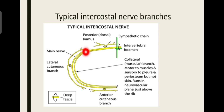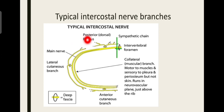The next branch is the lateral cutaneous branch. The lateral cutaneous branch also arises near the neck and travels the course of the intercostal nerve. When it reaches the mid-axillary line — the line drawn from the middle of the axilla — it emerges outside and gives its terminal branches posteriorly and anteriorly, thus covering the entire lateral aspect of the thoracic wall. So the lateral cutaneous branch supplies the skin present on the lateral aspect.